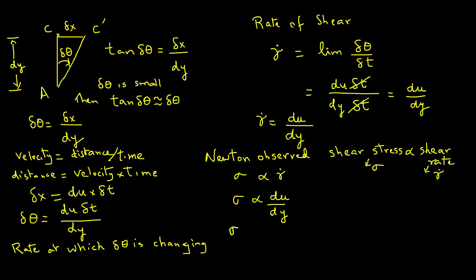If we remove the proportionality factor, then we have to introduce a constant. So sigma equals mu, where mu is the constant, times du over dy. Now mu is called the coefficient of viscosity. And this is what gives us an indication of the flow behavior of the fluid.